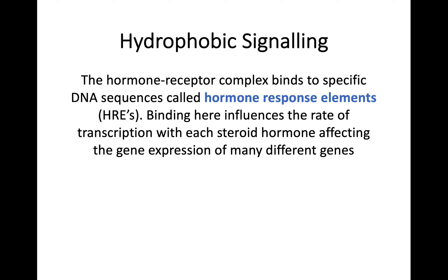These hormone receptor complexes are going to bind to specific DNA sequences or parts of DNA. These areas are called hormone response elements, or HREs. When you bind to an HRE, that's going to influence the rate of transcription. Each steroid hormone is going to affect the gene expression of many different genes — it's not just one set process. So you need to know hydrophobic signaling, a couple of examples, that they bind to intracellular receptors called transcription factors, and that the DNA sequences where the hormone receptor complex binds are called hormone response elements.